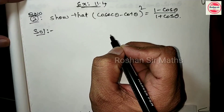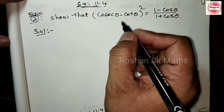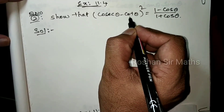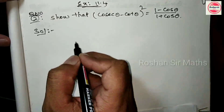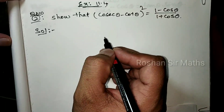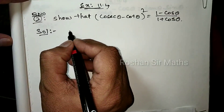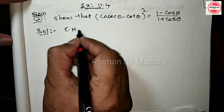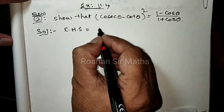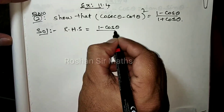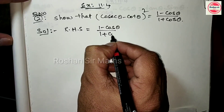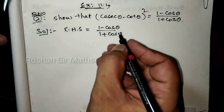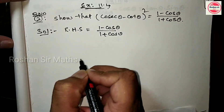इसके अंदर plus point ये रहता है कि चाहे हम LHS = RHS proof करो या RHS = LHS proof करो, दोनों में से कोई भी लेके हम proof कर सकते हैं। जो आसानी होरी उसको हम करेंगे। तो सबसे पहले अगर आप लोग आसानी चाहते हैं तो इसका RHS पहले ले लीजिए। RHS = (1 minus cos theta) by (1 plus cos theta). यह आपका आसान है।